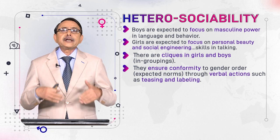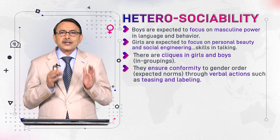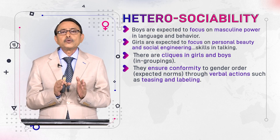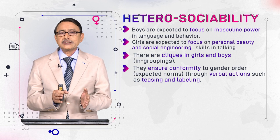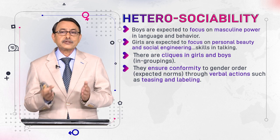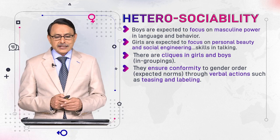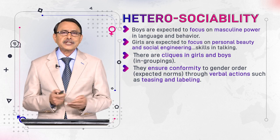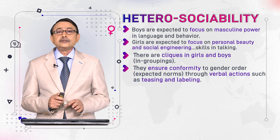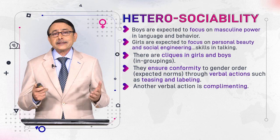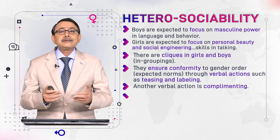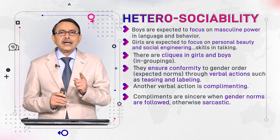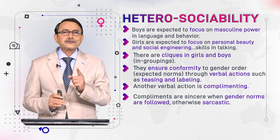These cliques learn a special kind of language and give labels to each other. These labels are used to invite attention of individual members who are not following gender norms, signalling they should come back to their roles. One verbal strategy is teasing individuals who are deviant in behaviour and not conforming to gender norms. Another strategy is offering compliments — if members follow the norms, compliments are sincere; if not, compliments are sarcastic and ironic.